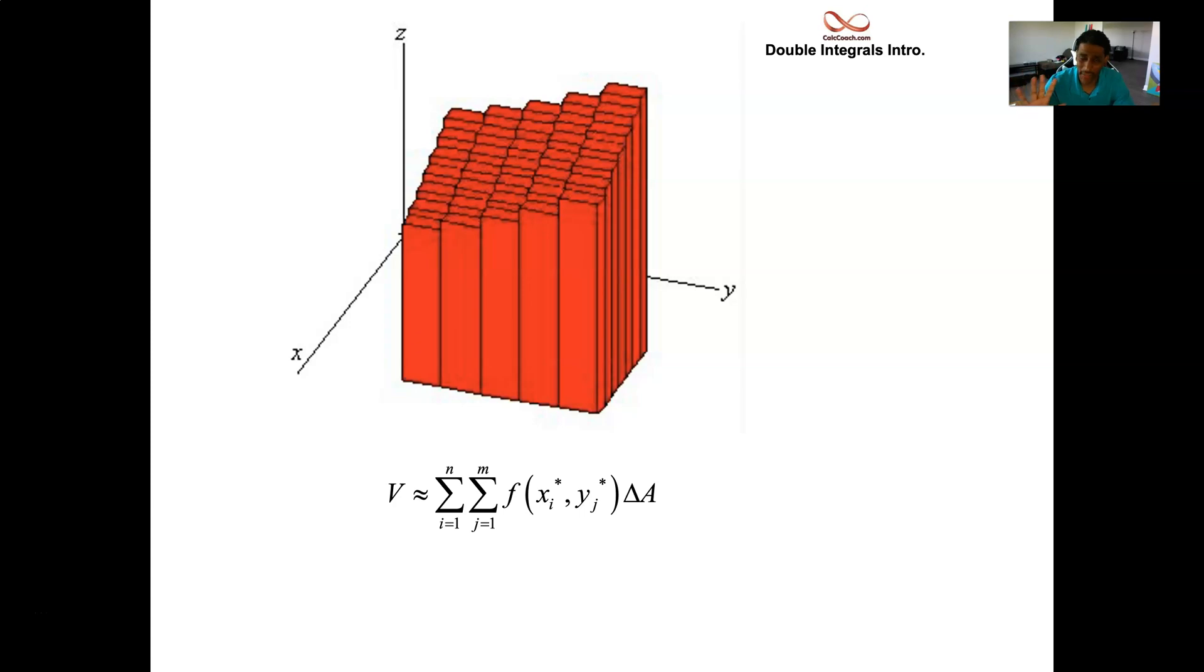In the last video, we looked at approximating. We said that we're going to add up the number of rectangular prisms, volumes, and make that an approximation to your volume. But we want exactness. And so we're going to get exactness by increasing the number of subdivisions.